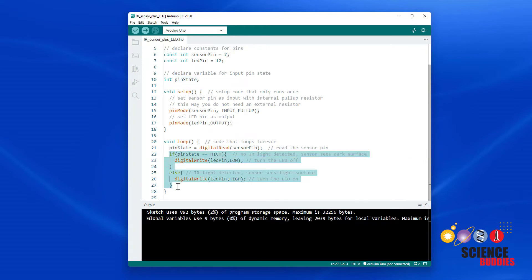Then we have an if else statement where if the pin state is high that means no infrared light is detected so the sensor sees a dark surface or it sees nothing that is going to turn the LED off. Else if the pin state is low that means infrared light is detected so the sensor is seeing a surface that is reflecting the light back and then we are going to turn the LED on.